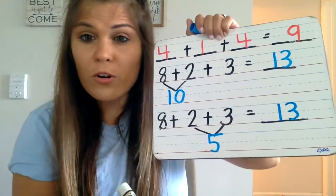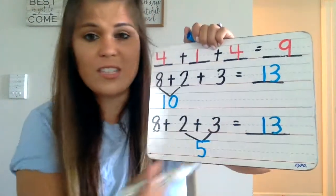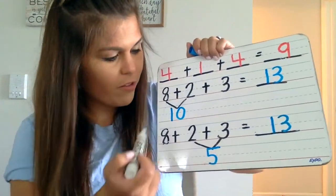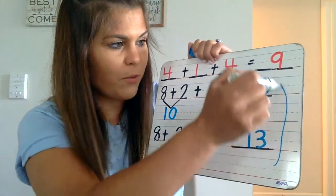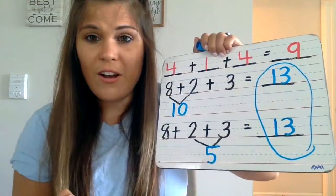I added in a different order, but I ended up with the same sum because all of my addends are the same. If I have the same addends, I end up with the same sum.